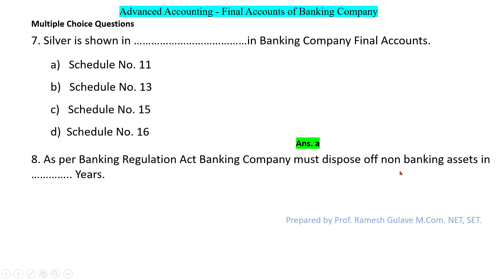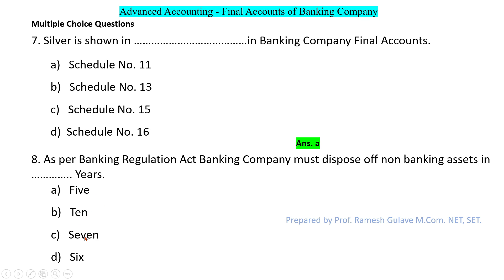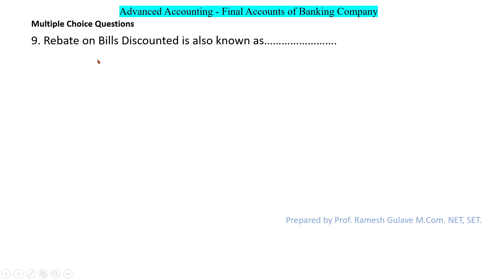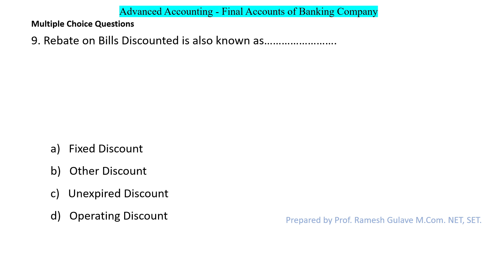The next question says: as per the Banking Regulation Act, a banking company must dispose of non-banking assets within how many years? Non-banking assets must be disposed of within seven years from their acquisition, so option C is the right answer.